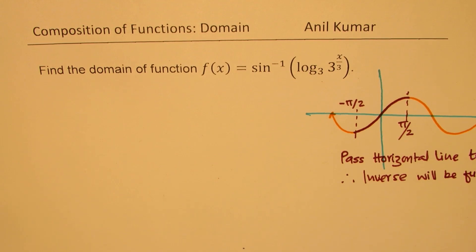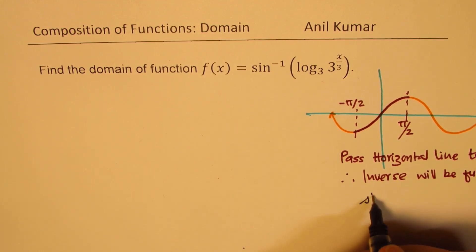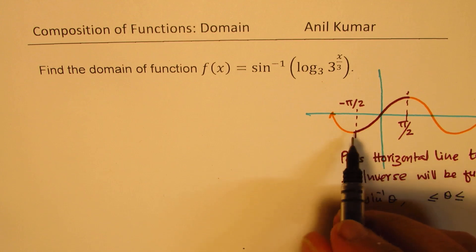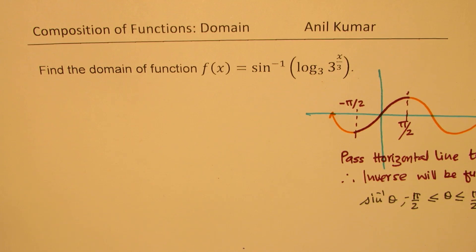So basically for sine inverse theta, we take theta in between these values, minus pi by 2 to plus pi by 2. So that is the basis to solve the given question. Is that clear to you?